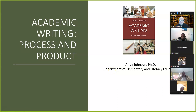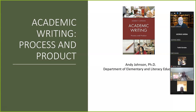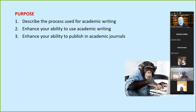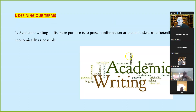My goal today is to give you some ideas about how to get published in academic journals, and it's not that difficult if you just follow the process. I'm going to try to do these three things today: describe the process, enhance your ability to use academic writing, and help you get published in academic journals. That's my goal for the end of today. Please feel free to ask any questions along the way.